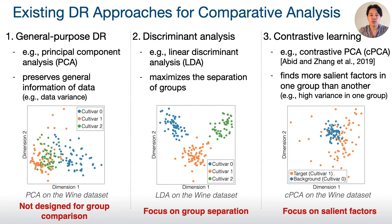For example, with CPCA, we can find an embedding space where a target group has much higher variance than a background group.